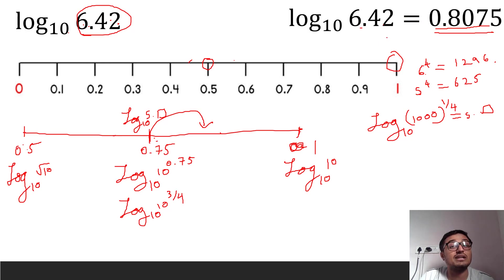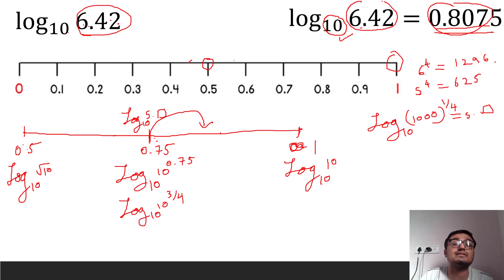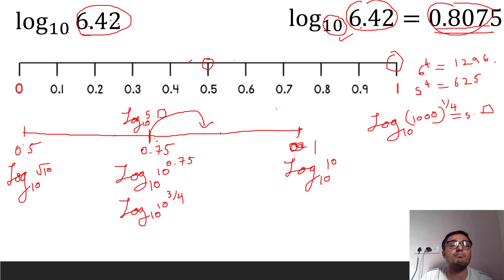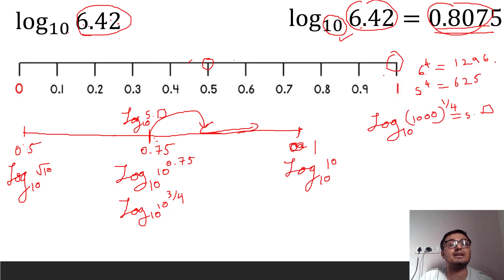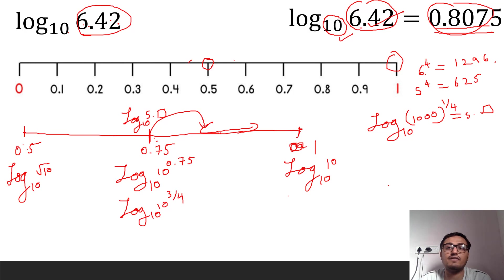This means 10 raised to 0.8075 is approximately 6.42. Briggs performed this bisection iteration for all 9000 numbers from 1.001 to 9.999, narrowing the interval each time until four decimal places stabilized. The sheer volume of calculation — all done without a calculator — represents an extraordinary mathematical achievement.